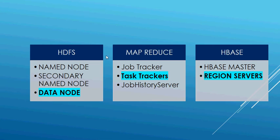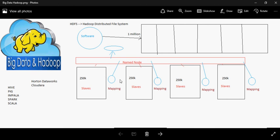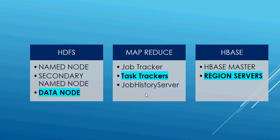Next is MapReduce, which has three components: JobTracker, TaskTrackers, and JobHistoryServer. The JobTracker is the master of the system for MapReduce and tries to schedule each map task as close as possible to the actual data being processed. TaskTrackers run on the data nodes and are deployed on each machine in the cluster. The JobHistoryServer is a daemon that serves historical information about completed applications.